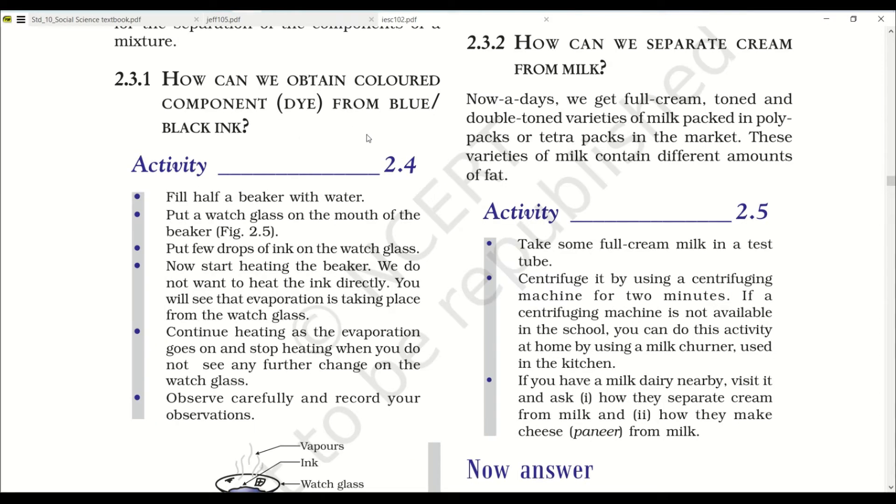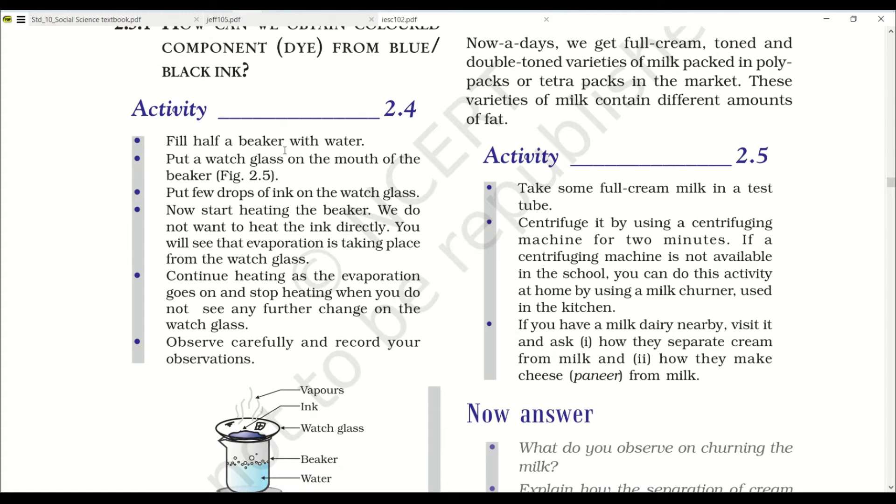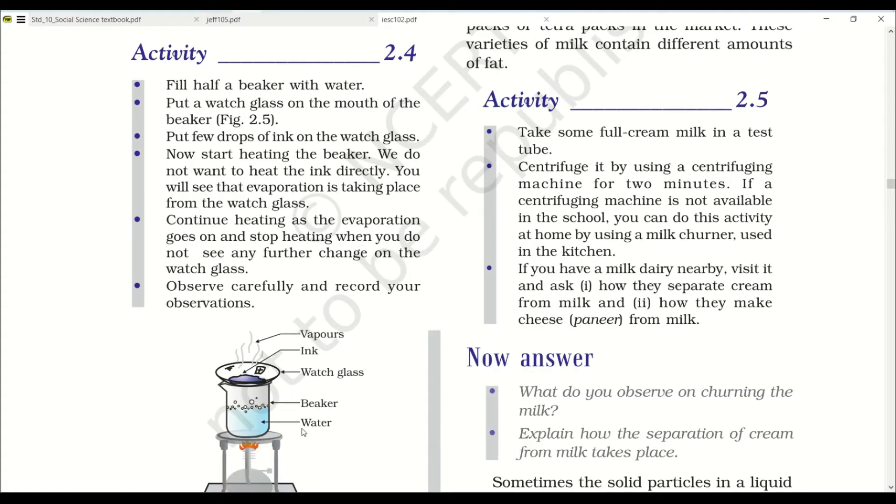How can we obtain colored component dye from blue or black ink? Let's read the activity. Fill half a beaker with water. You can also look at the diagram. Put a watch glass on the mouth of the beaker. This is the watch glass. Put few drops of ink on the watch glass. Now start heating the beaker. We do not want to heat the ink directly. You will see that evaporation is taking place from the watch glass.